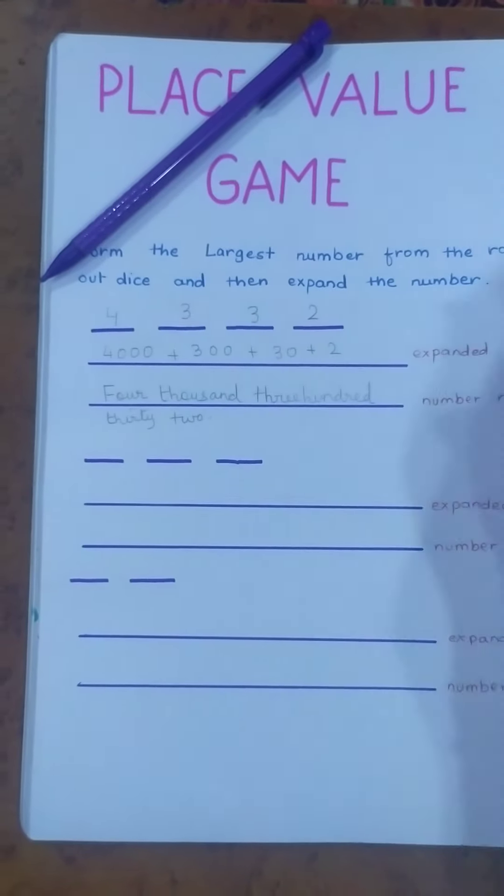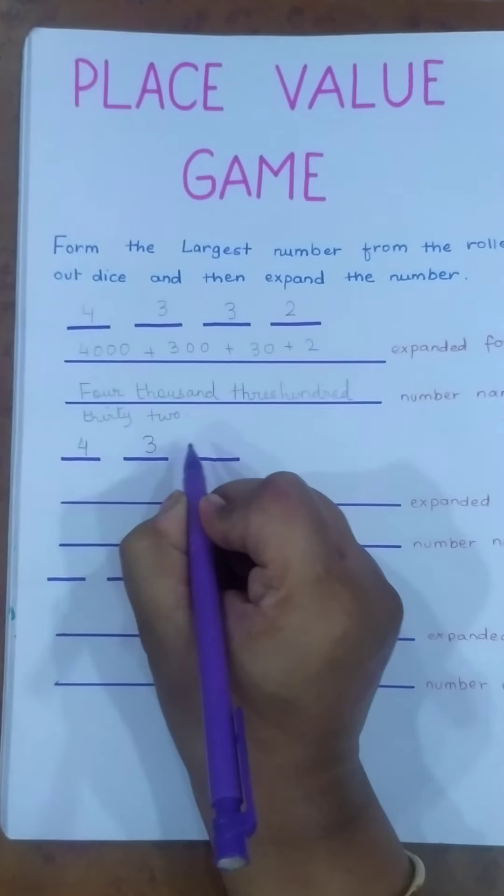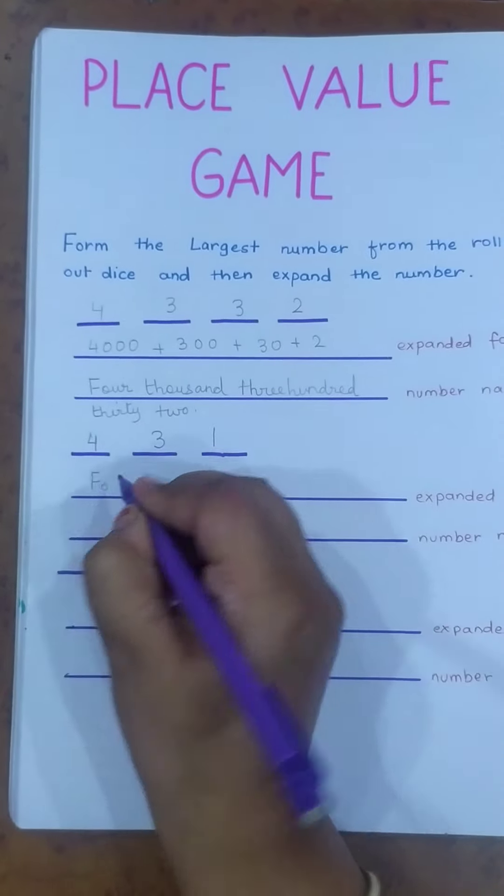So let's write 431. So 431. Here we have to write it in the expanded form, so it will be 400 plus 30 plus 1. This is my expanded form. And now I have to write the number name. So you will tell the child to write four hundred thirty-one.